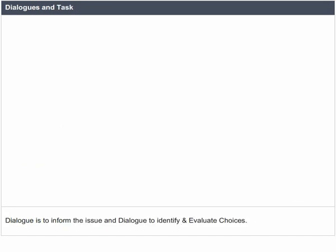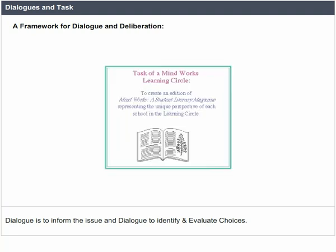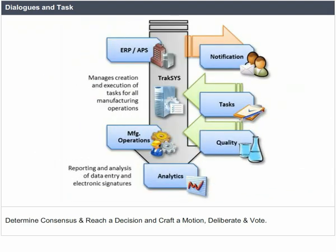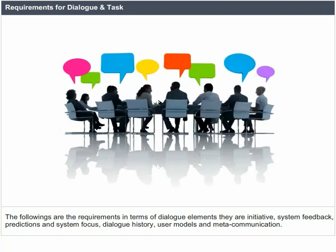A framework for dialogue and deliberation includes: dialogue to inform the issue, dialogue to identify and evaluate choices, determine consensus and reach a decision, craft a motion, deliberate and vote. Requirements for dialogue and task include the following dialogue elements: initiative, system feedback, predictions and system focus, dialogue history, user models, and meta-communication.